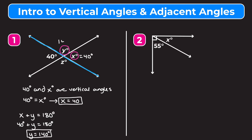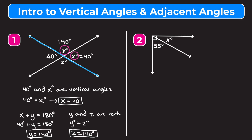This angle is 140 degrees. Now using the property of vertical angles, y and z are vertical angles, which means y equals z. Since y is 140 degrees, z is also 140 degrees. In this problem we used both vertical and adjacent angles to figure out all the values of the variables.